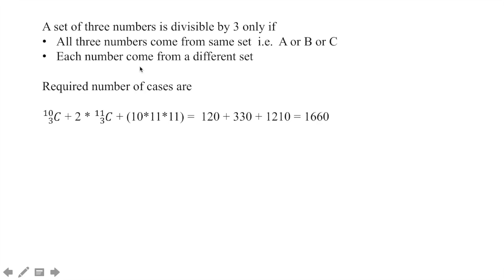If the numbers come from different sets, total number will be 10 into 11 into 11. Isko sab sum kareenge. Total sum will be 120 plus 330 plus 1210. That is 1660.